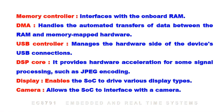The memory controller interfaces with the onboard RAM. DMA handles the automated transfer of data between the RAM and the memory-mapped hardware. The USB controller manages the hardware side of the device's USB connection. The DSP core provides hardware acceleration for some signal processing such as JPEG encoding.